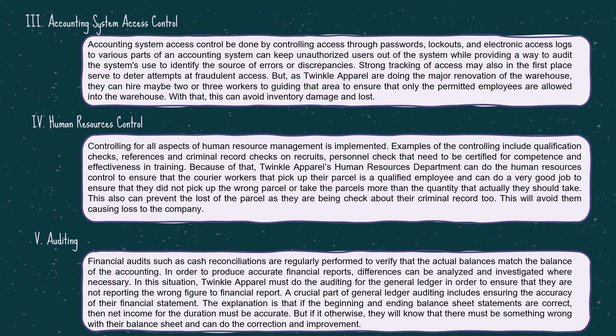Thirdly, accounting system access control — controlling access through passwords, lockups, and electronic access logs to various parts of the accounting system. This can keep unauthorized users out of the system while providing a way to audit the system and identify the source of errors or discrepancies. Strong access tracking may also deter fraudulent access attempts. As Twinkle Apparel is undergoing major renovation of the warehouse, they can hire two or three workers to guard the area and ensure only permitted employees are allowed in.